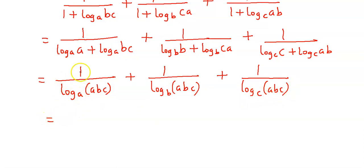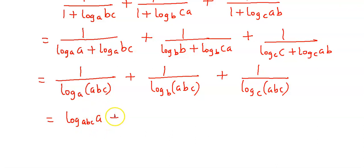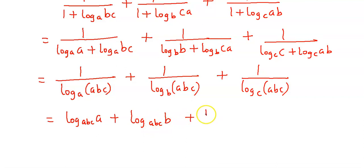अब अगर यह log term को हम numerator में लेते हैं, तो base और argument interchange हो जाएंगे — तो यह हो जाएगा log of A और base में आएगा ABC. Similarly, इसे numerator में ले जाते हैं तो यह हो जाएगा log of B and base में ABC, plus this becomes log of C and base में ABC.